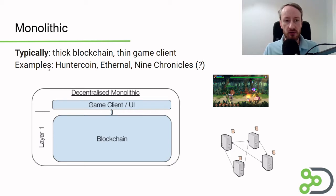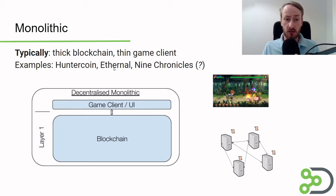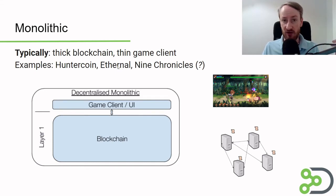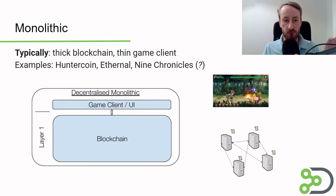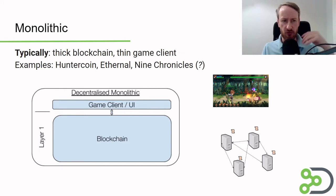Examples of this are Huntercoin, the very first decentralized game, and Eternal, which I also mentioned in a previous video — it's no longer running but the game logic was in a smart contract running on xDai. This is simple and interesting but just the start of the journey. It's probably a good place to start if you're new — either doing it this way or doing a random number approach where you have a random number from a block but push most of the computation off-chain.